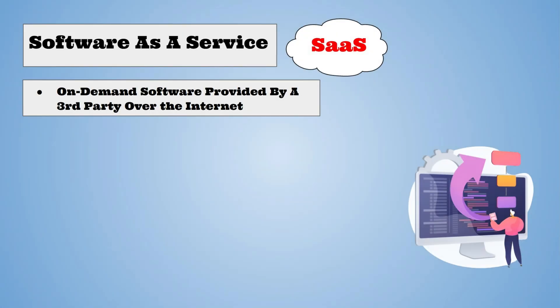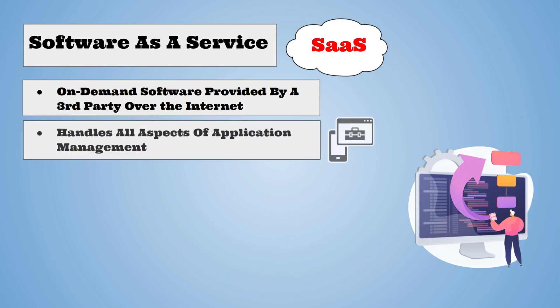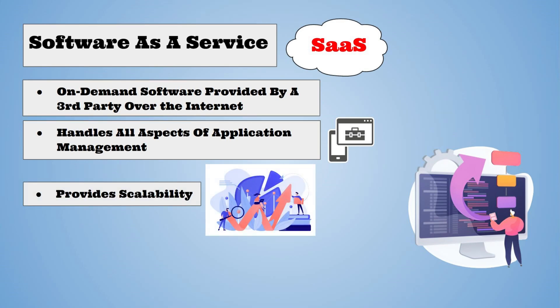Software as a Service is on-demand software or an application that is provided by a third party over the Internet. This model prevents the unnecessary workload that comes with coding, installing, managing, and maintaining an application. Cloud providers are required to maintain the application, as well as the data that comes with it. Software as a Service also provides scalability — you can simply adjust resources up and down as necessary.